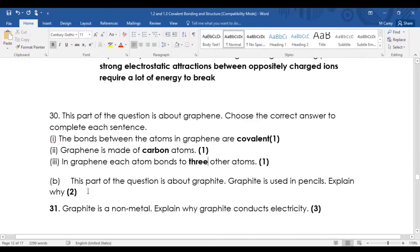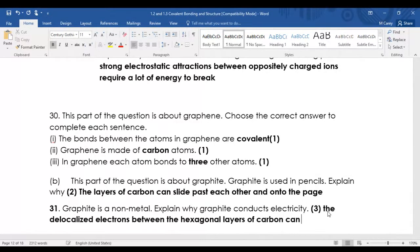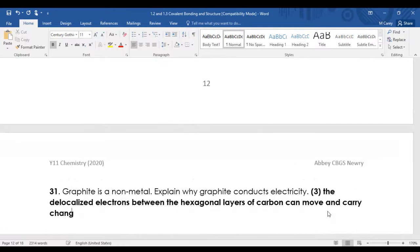Explain why the layers of carbon in graphite can slide past each other. Graphite is a non-metal with delocalized electrons between the hexagonal layers of carbon that can move and carry charge.